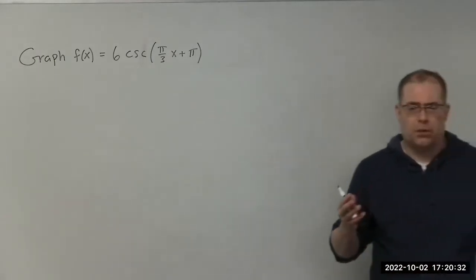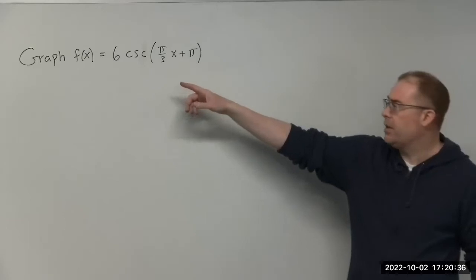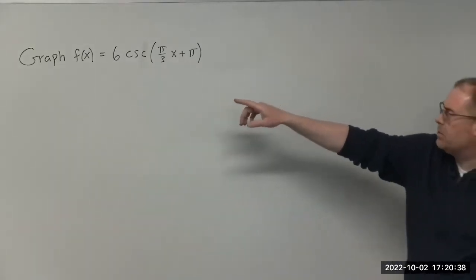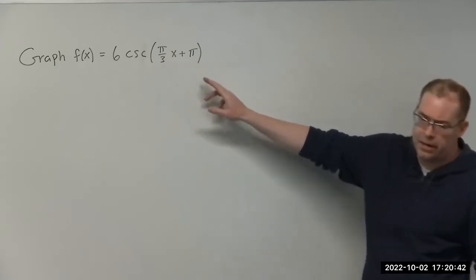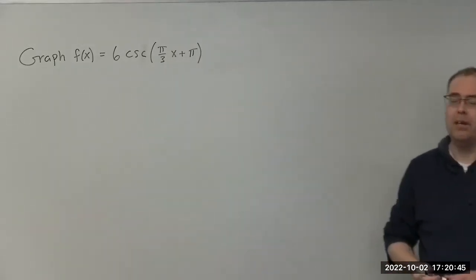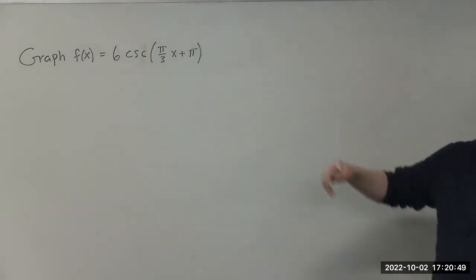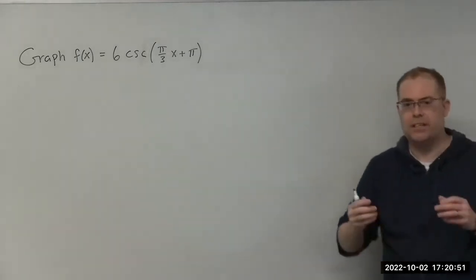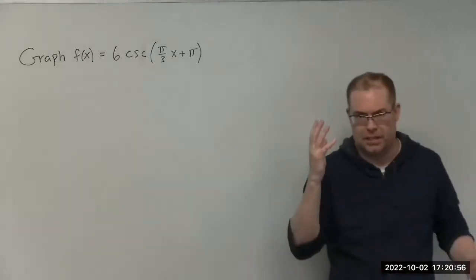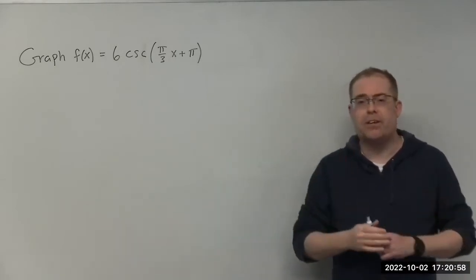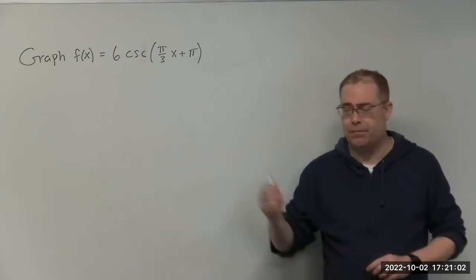Hello. In this video, I'm going to show you how to graph this type of function. We have f of x equals 6 times cosecant of pi over 3 times x plus pi. The way to plot this is to actually plot the sine function, because cosecant is just 1 over sine. So the idea is to plot the sine function first, and then from there it's relatively easy to come up with the graph.